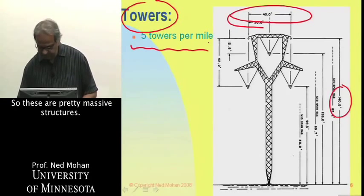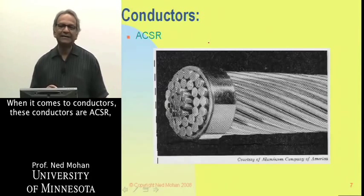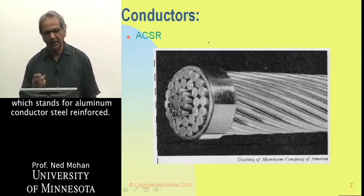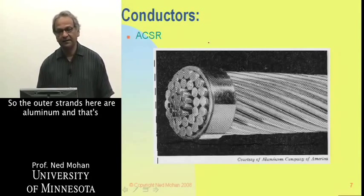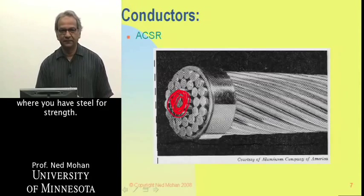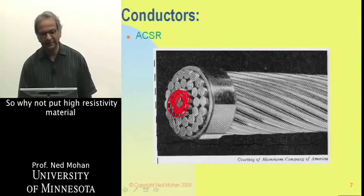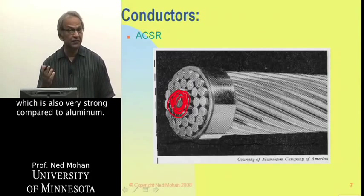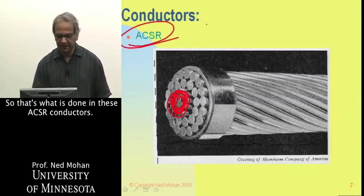These are pretty massive structures. When it comes to conductors, these are ACSR — Aluminum Conductor Steel Reinforced. The outer strands are aluminum, and that's where the current flows. But inside, there is steel for strength. Generally the current doesn't flow through the steel, so it makes sense to use a higher-resistivity but very strong material there. That's what is done in these ACSR conductors.